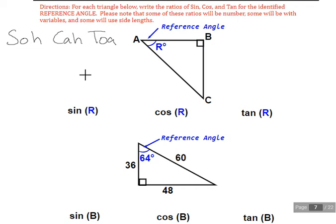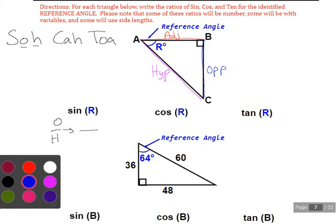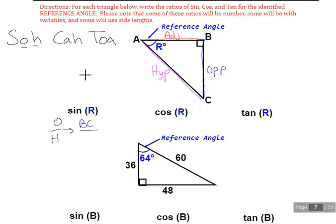So in this triangle ABC, we have reference angle R. So let's do some labeling. Not touching, opposite. Across from the right angle, hypotenuse. Touching, adjacent. So sine is going to be opposite over hypotenuse. In reference to angle R, opposite is going to be, well, I don't have a variable, I don't have a number, and so I have to call it by this two-letter side length, BC. And the hypotenuse is going to be AC.